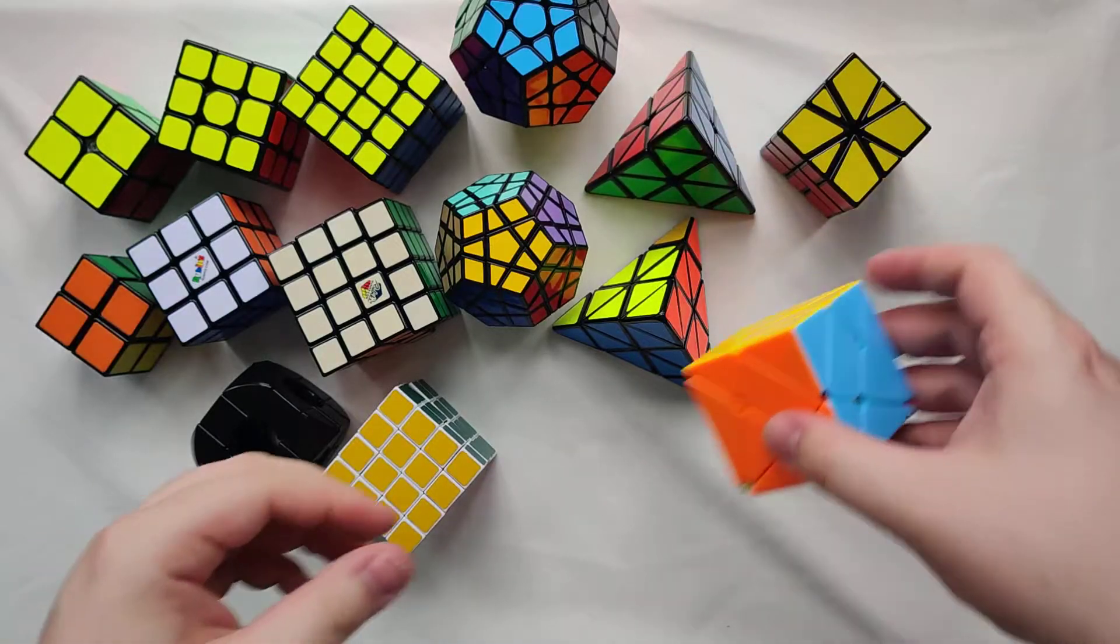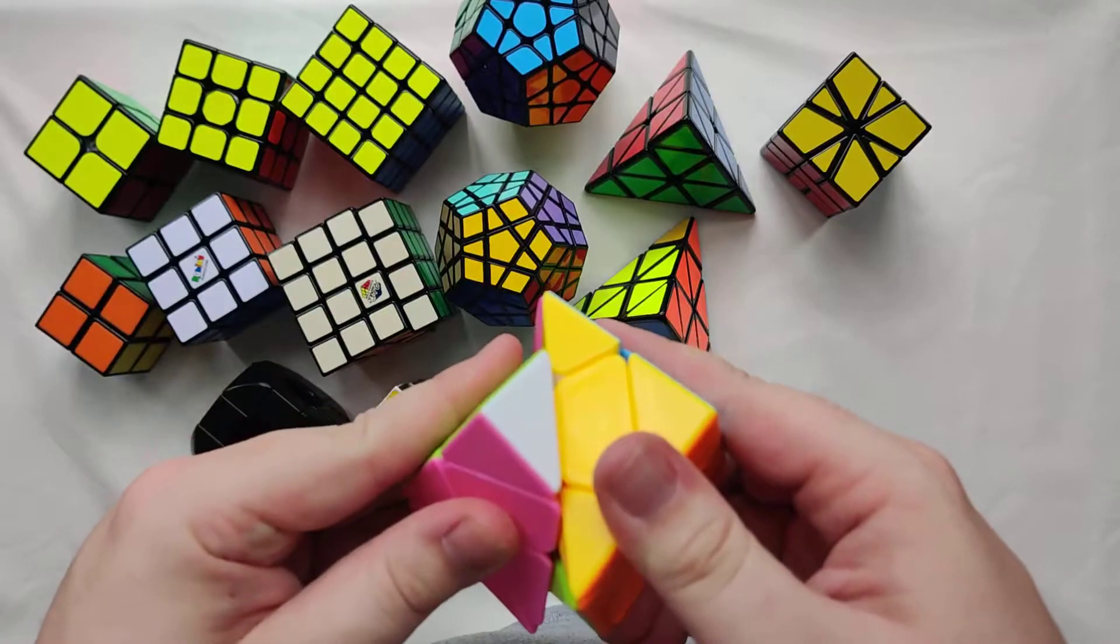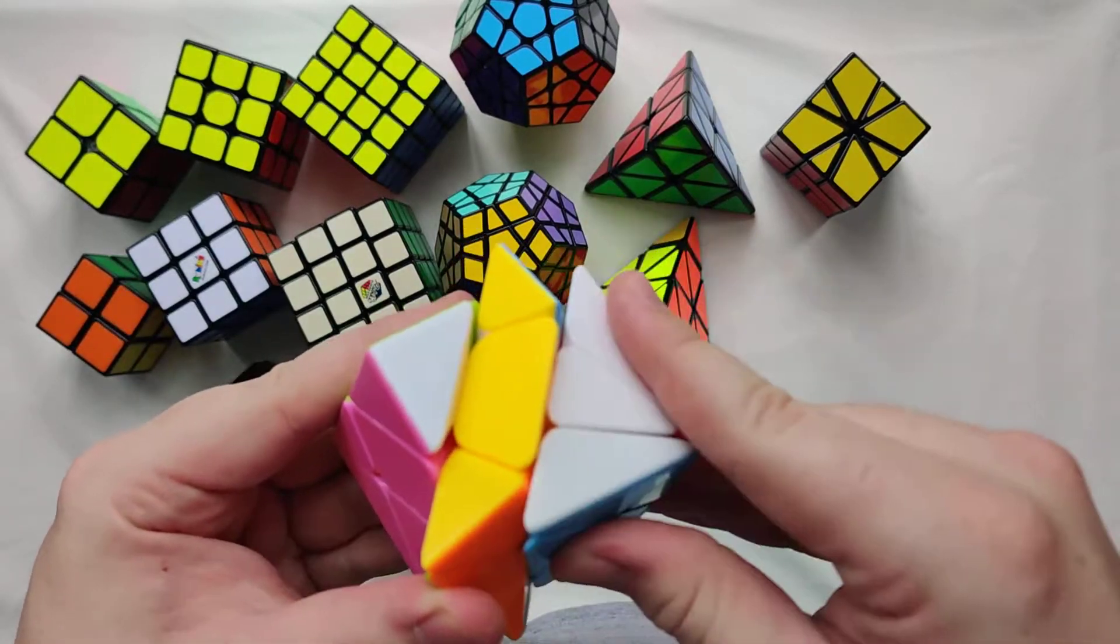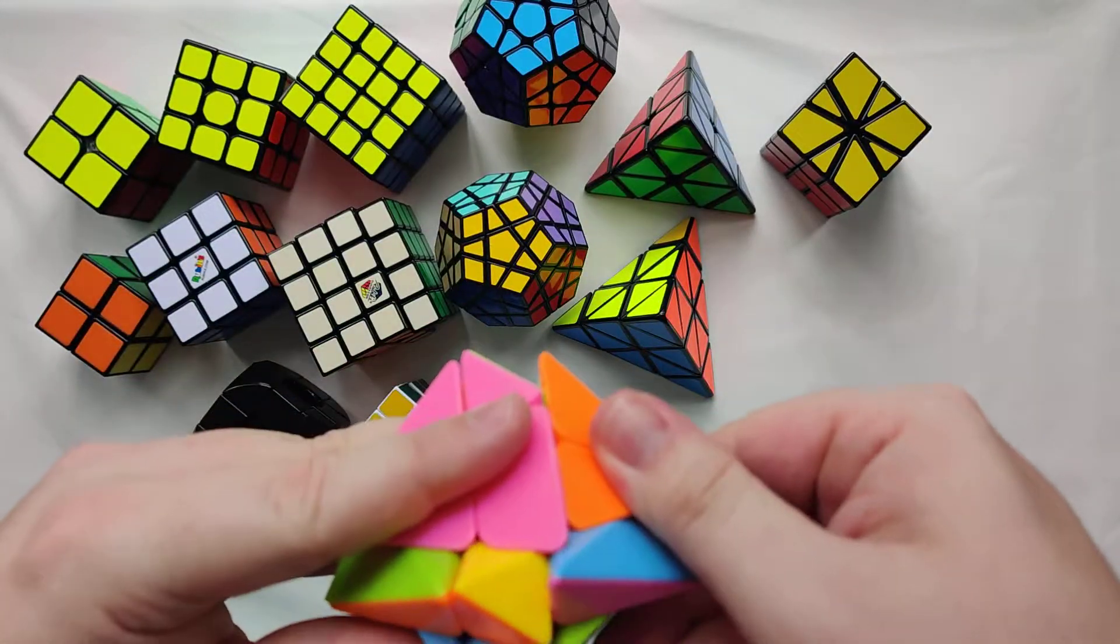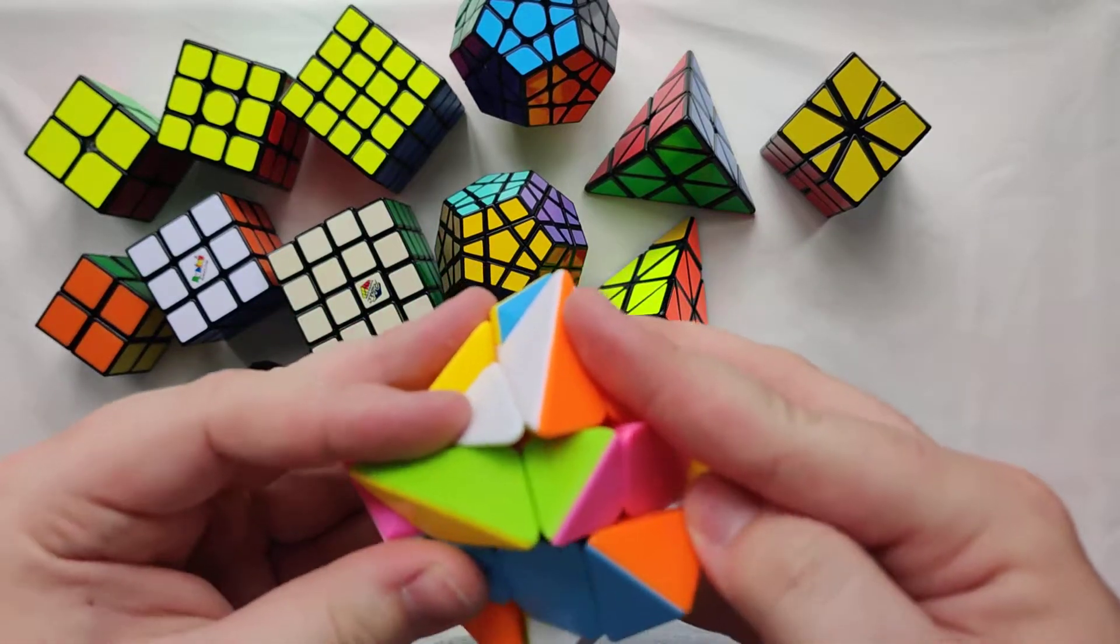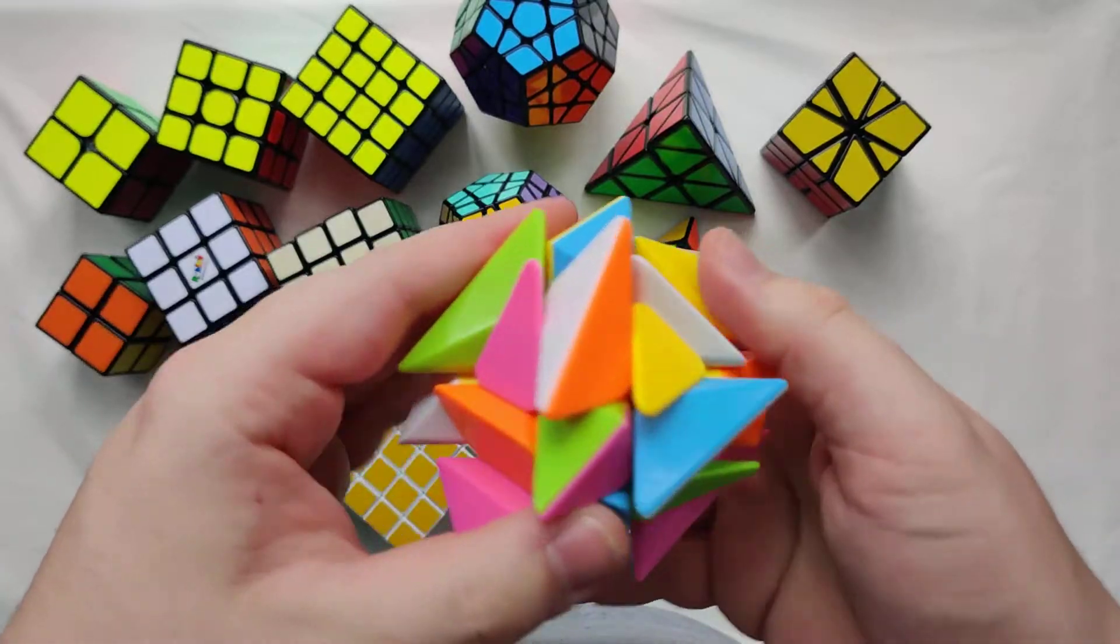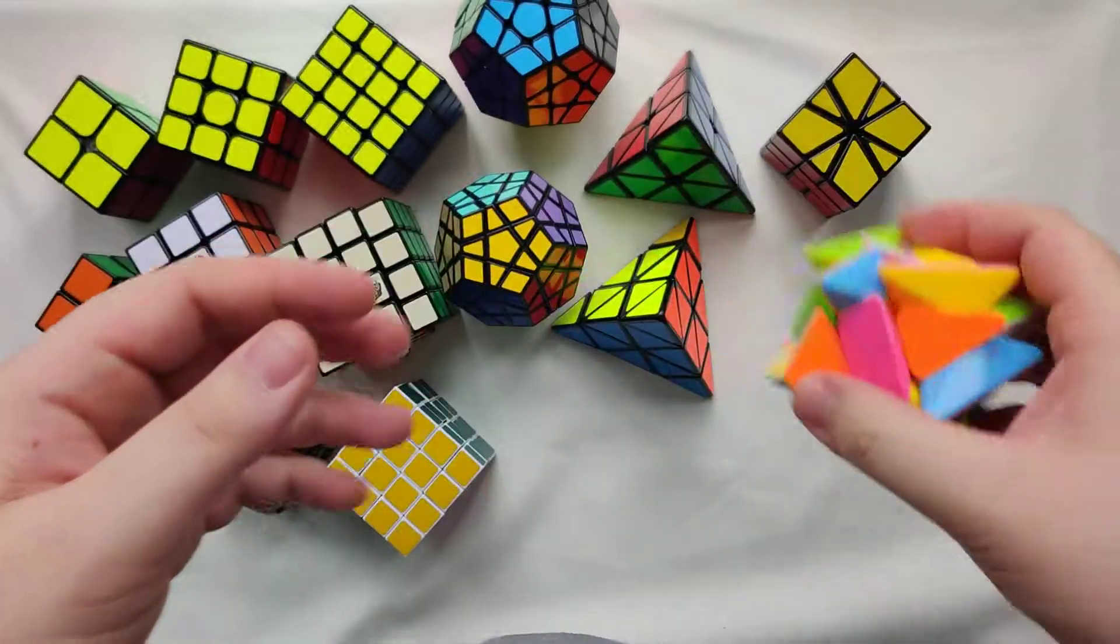Then we have my Axis Cube. This I bought from the shop The Works here in the UK. Again, one of my least favorites to solve because it's a shape shifter. And I'm not a huge fan of shape shifters. That is the checkerboard pattern.